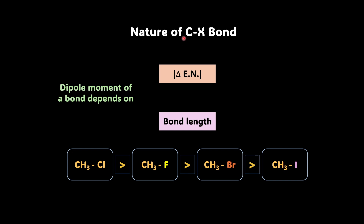Now that you've understood the nature of the carbon-halogen bond, understanding the physical properties like boiling point and solubility, as well as the chemical properties like reactivity of different alkyl halides, will become very simple.